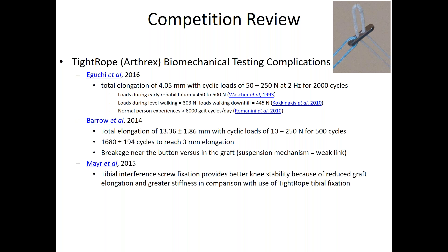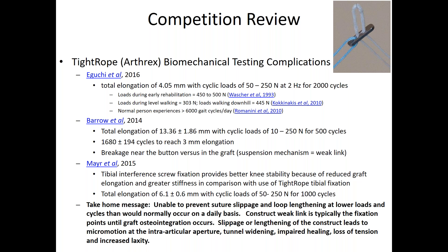Similar results were reported by Mayer et al., whose conclusion was: you can't use a tightrope suspension system on both the femur and tibia — you'll need an interference screw on at least one side. And even then, you still get 6 millimeters of elongation at low cycles and low loads. The take-home message: the system is unable to prevent suture slippage and loop lengthening at loads and cycles that would normally occur on a daily basis. The construct weak link is typically the fixation point until graft osteointegration occurs, leading to micromotion at the intra-articular aperture, tunnel widening, impaired healing, loss of tension, and increased laxity.